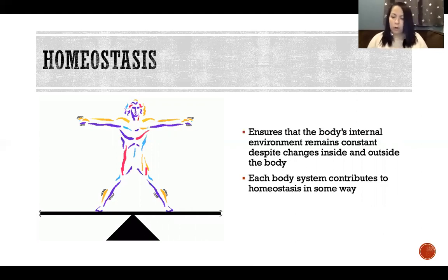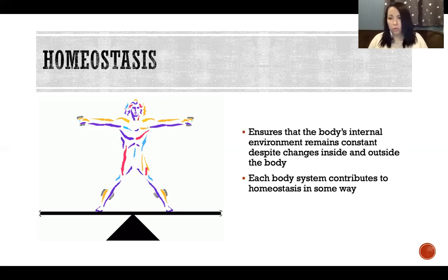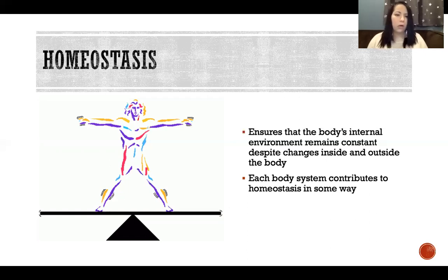Each body system contributes to homeostasis in some way. Every system of the body has some contribution it makes to the homeostasis of the entire body — to our survival. The reproductive system, of course, has functions in reproduction, which is a rare function of the body that does not determine our survival. We might not be able to reproduce or choose not to, and that isn't going to cause our demise. Whereas most other functions in the body, if something doesn't work or loses its homeostasis, cause disease or even death.